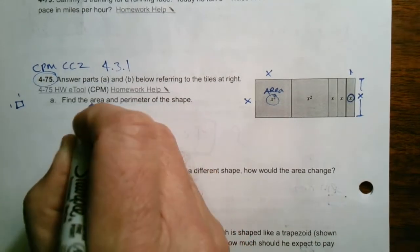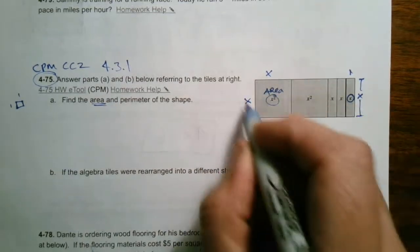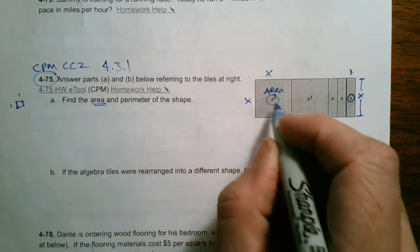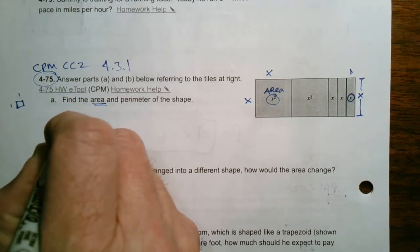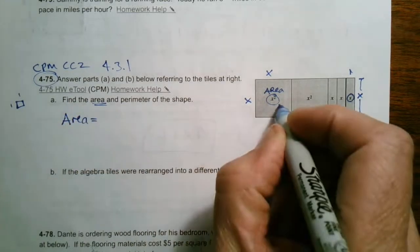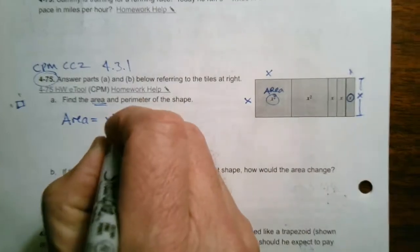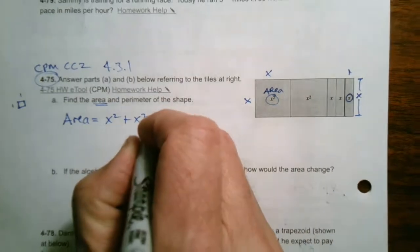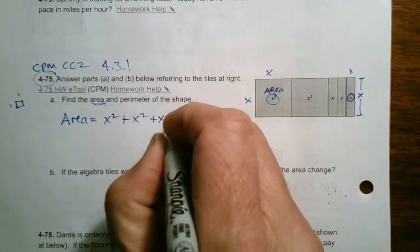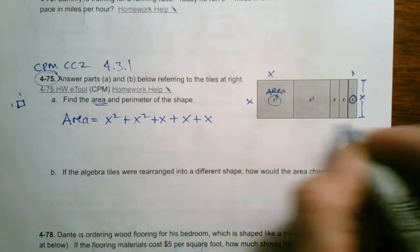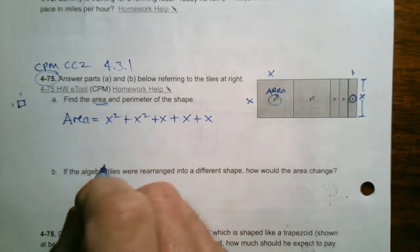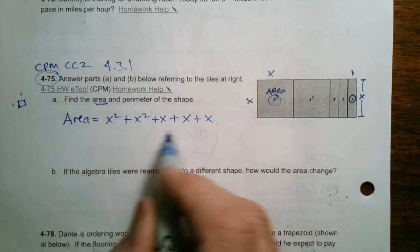So if we're going to find the area of this set of tiles all put together there, we would look at it a couple ways. I could say the area is equal to, you have an x-squared tile plus another x-squared. So the area is x-squared plus x-squared plus x plus x. There's three x's there. So that's one way of writing it as an expression. But we can actually simplify this expression.